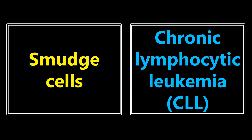Smudge cells: this is going to be in reference to chronic lymphocytic leukemia. People remember this as CLL standing for 'crushed little lymphocytes.' If you see a smudge cell, it literally looks on the peripheral blood smear like somebody pressed their finger against the cell — make the association with CLL. Thank you so much for watching. Please leave a comment, please subscribe, I hope this was helpful, and good luck studying.